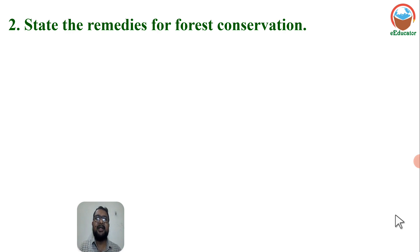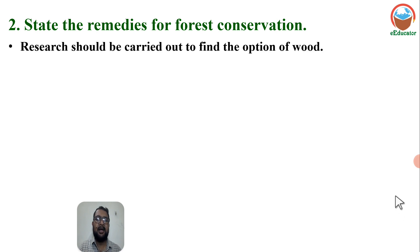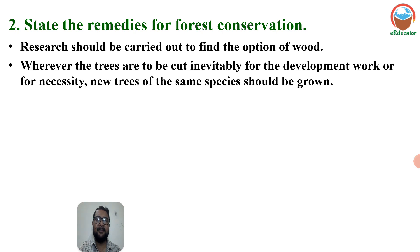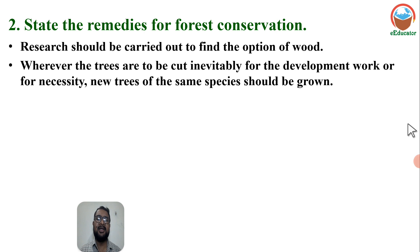Number two: State the remedies for forest conservation. Research should be carried out to find alternatives to wood. Wherever trees have to be cut inevitably for development, new trees of the same species should be grown. If you cut five trees, grow another five trees of the same species so we can maintain balance.